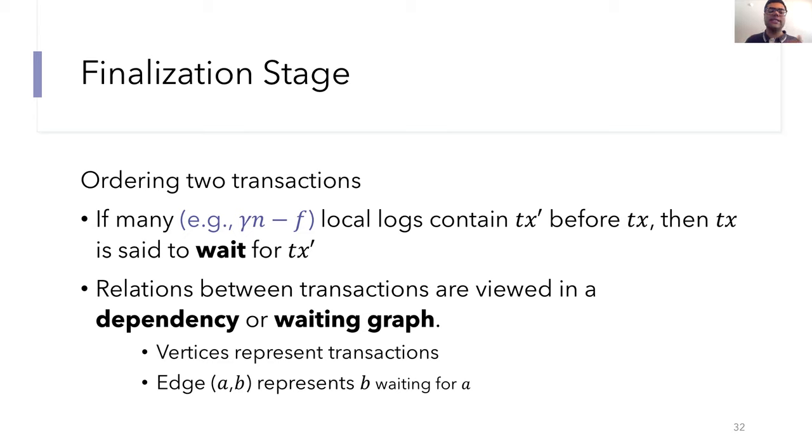For this, a node will look at if one transaction occurs before the other in a large number of these local logs. So for example, if many local logs contain TX prime before TX, then ideally TX prime should be delivered first. This means that before proceeding with the finalization stage for TX, we should wait until TX prime has been delivered in the final log. So in this case, we say that TX is waiting for TX prime. And these sort of relations between transactions can be viewed as a directed graph, which we call the dependency or the waiting graph. In this graph, vertices will represent transactions and an edge from A to B will represent that B is waiting for A to be delivered.